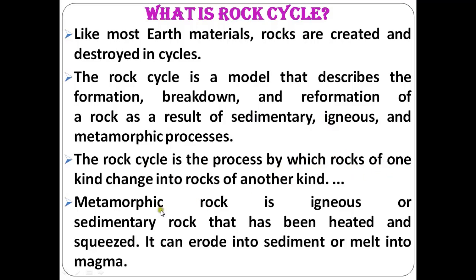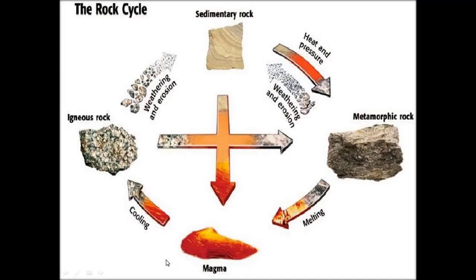Metamorphic rock is igneous or sedimentary rock that has been heated and squeezed — it can erode into sediment or melt into magma. In the rock cycle, magma after cooling gives you igneous rock. After weathering and erosion, you find sedimentary rock. Heat and pressure then gives you metamorphic rock, and from igneous rock you can also get metamorphic rock.